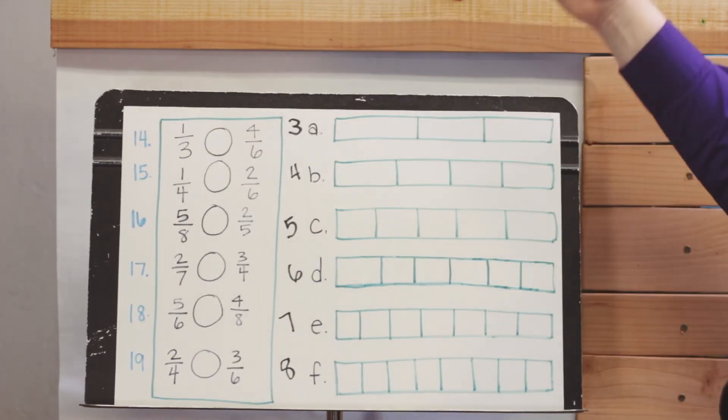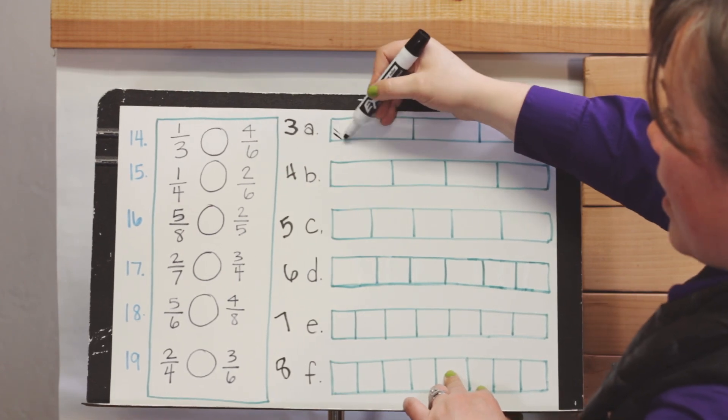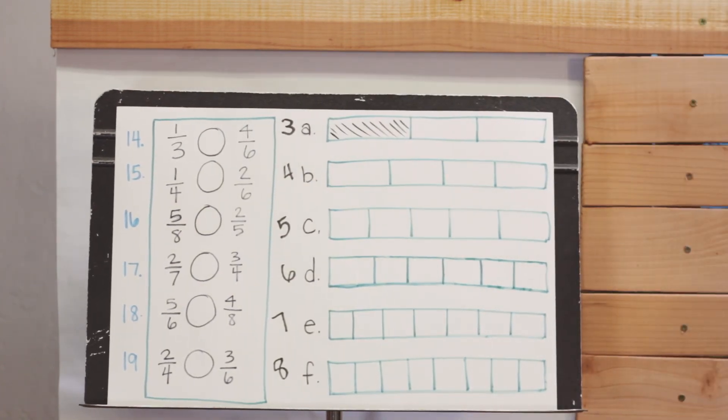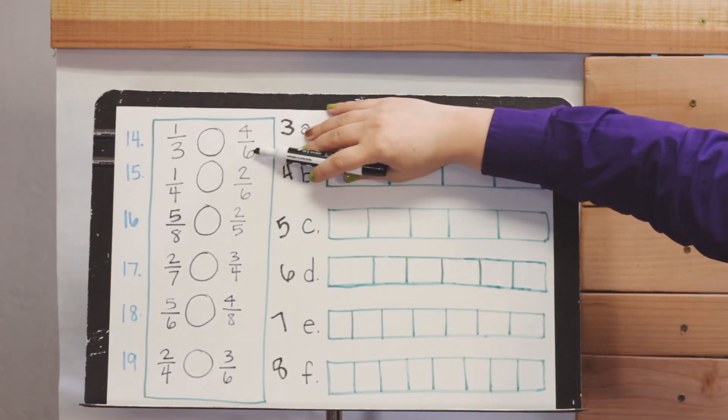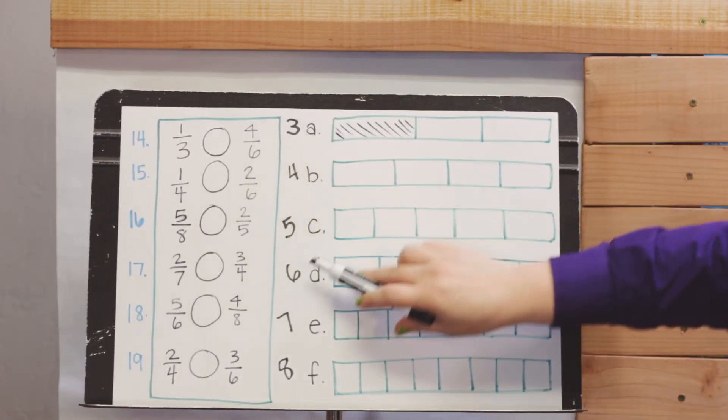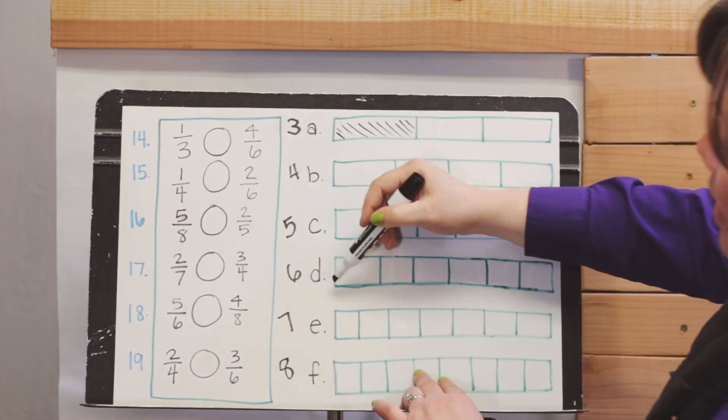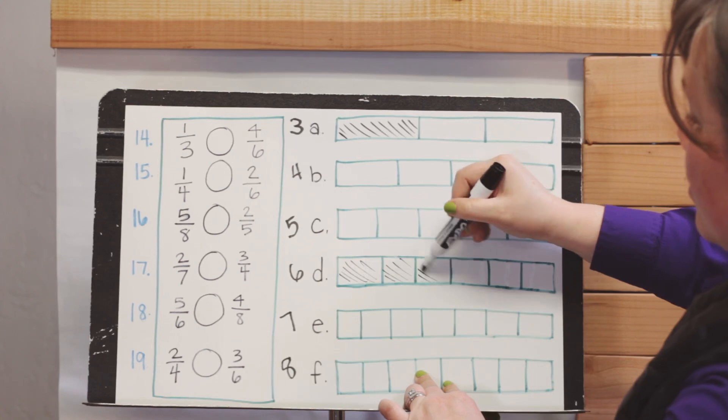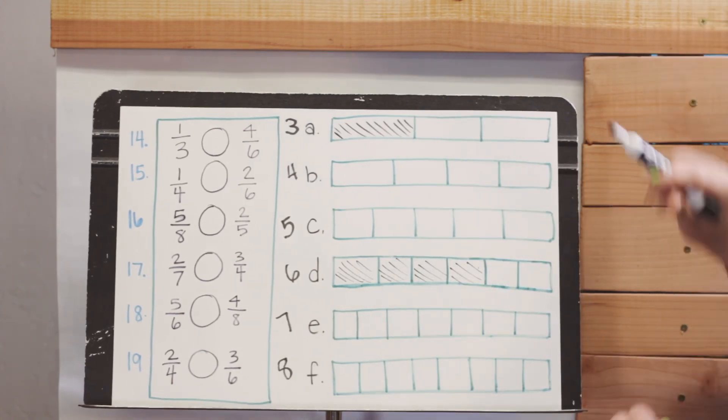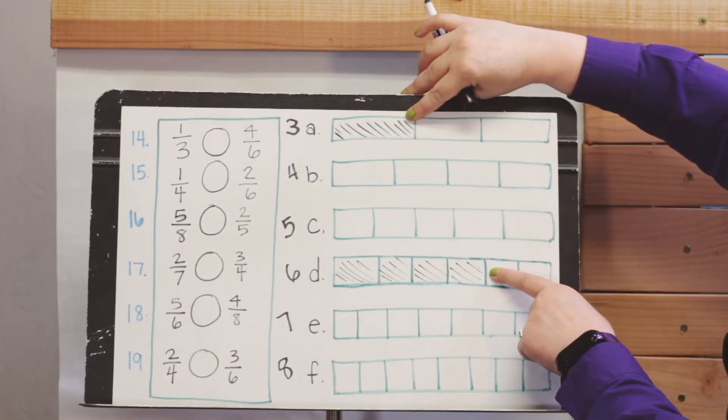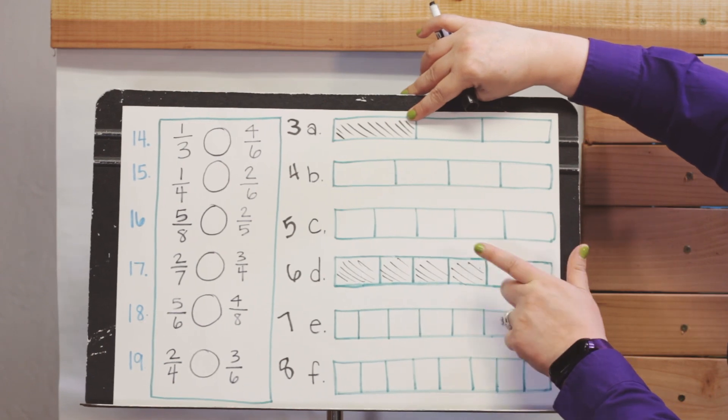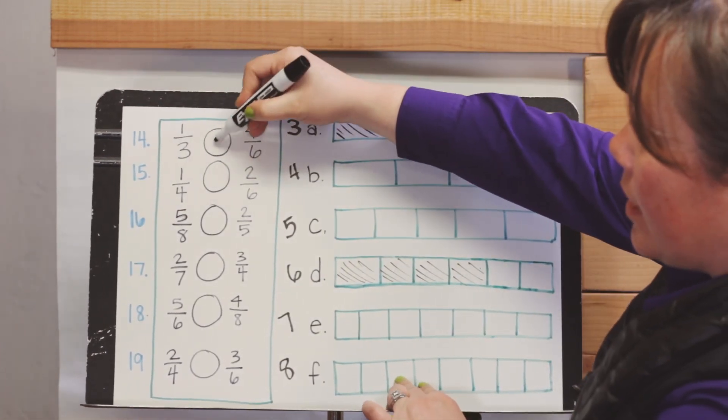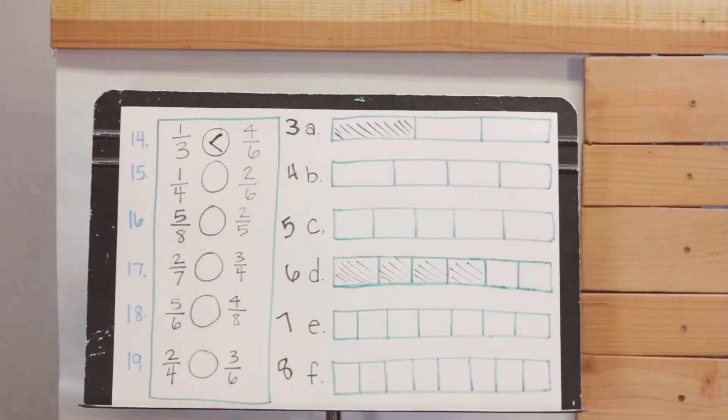So with one-third, I'm going to shade very lightly one of those three pieces. And then I'm going to find the sixths and I'm going to color four of them. So here's my sixth, and I'm going to color four. Here's one, two, three, and four. And you can see which one really is larger. Four-sixths is much larger than a third. And so I'm going to eat up the bigger number. And that's what they want you to do.